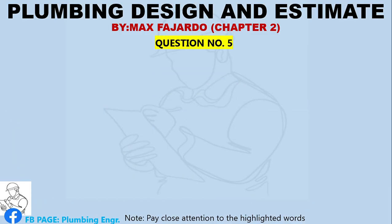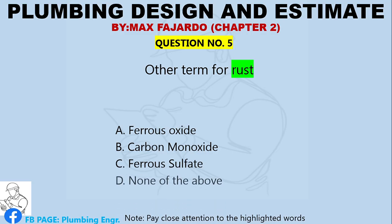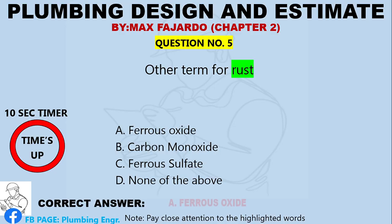Question Number 5. Other term for rust. A. Ferrous oxide. B. Carbon monoxide. C. Ferrous sulfate. D. None of the above. Correct answer: Letter A, ferrous oxide.